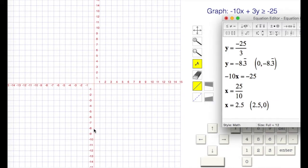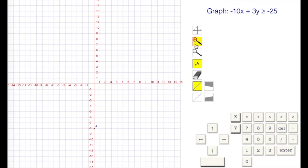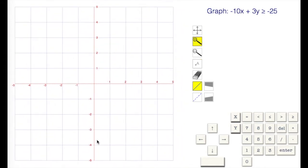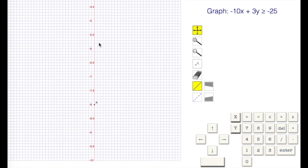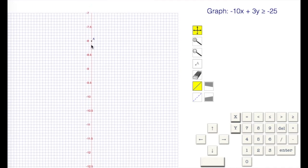Zero, negative 8.3 repeating. Here's negative 8 right here. I'm going to zoom in on that. Translate down a little bit. So this is negative 8, and we're after negative 8.3 repeating.